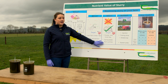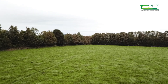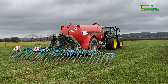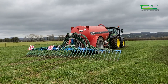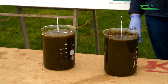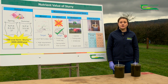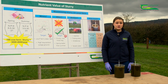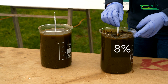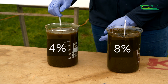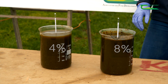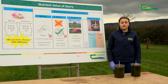We want to target spreading in the springtime on a cool moist day, making use of low emission slurry spreading systems such as injection and trailing shoe. Before spreading slurry it's important to check the dry matter content, as this will impact the nutrients provided. Here we have two samples — a thick slurry at about 8% dry matter and a watery slurry at about 4% dry matter — using a slurry hydrometer to check dry matter and ensure we're providing the correct nutrients for the crop.